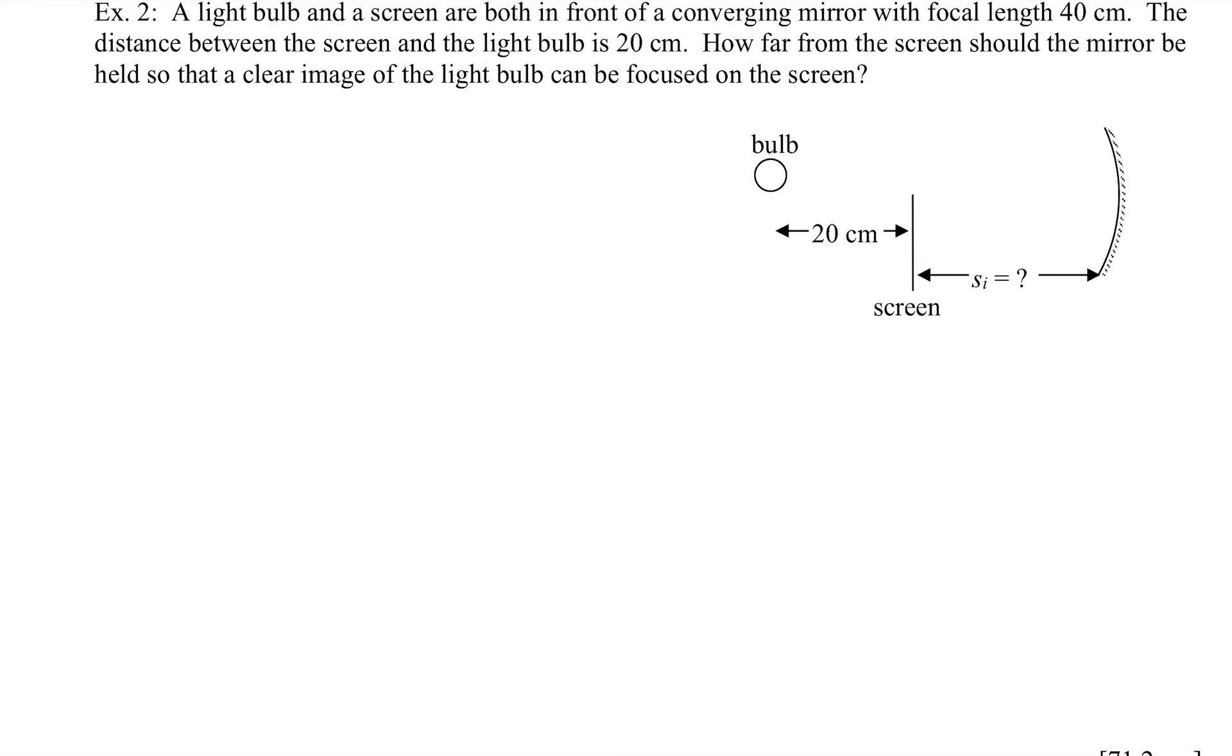So one thing I noticed about this diagram is that it does not include SO. SO is the distance from the object to the mirror. So SO would be this entire distance here. That's SO. And now, the connection between SO and SI is that SO equals 20 plus SI. That's one equation.